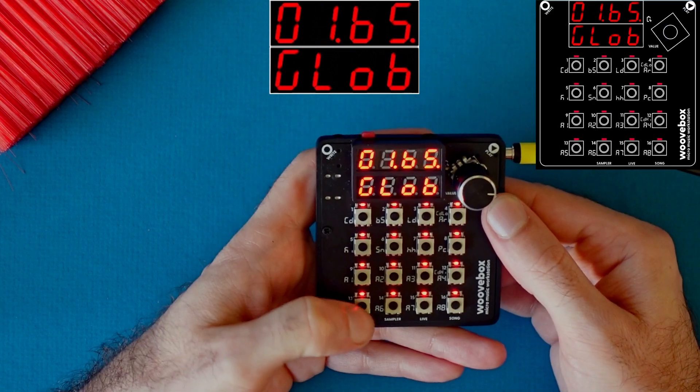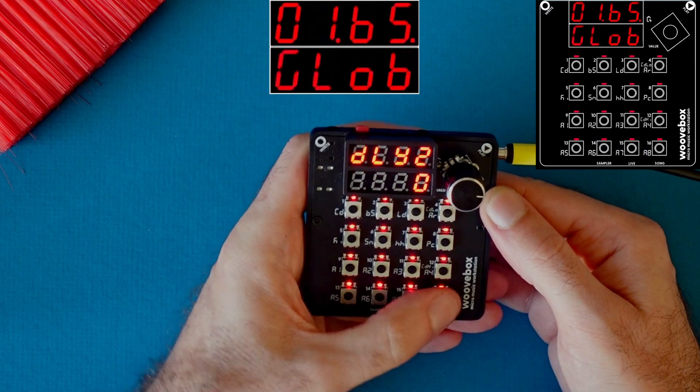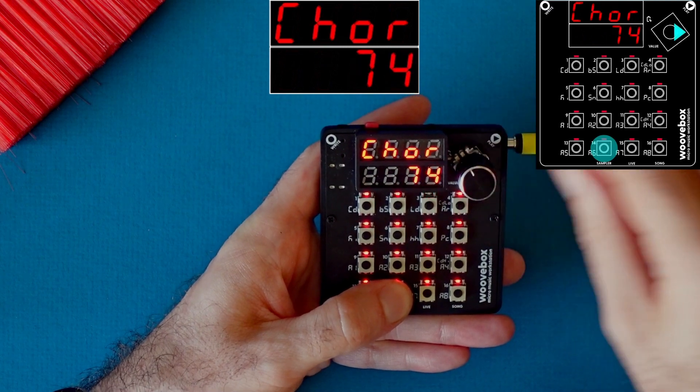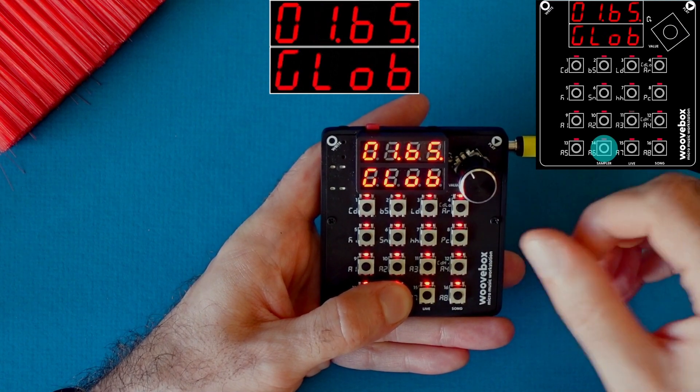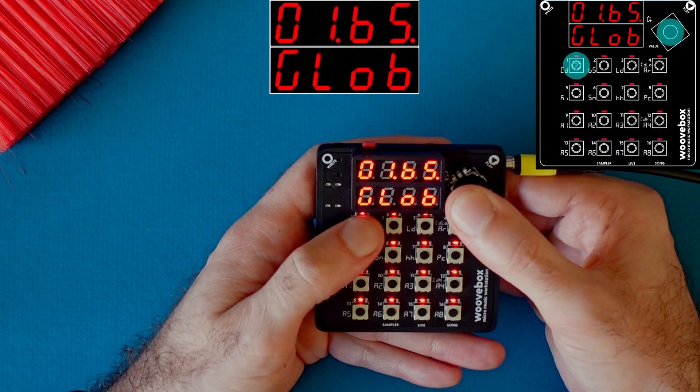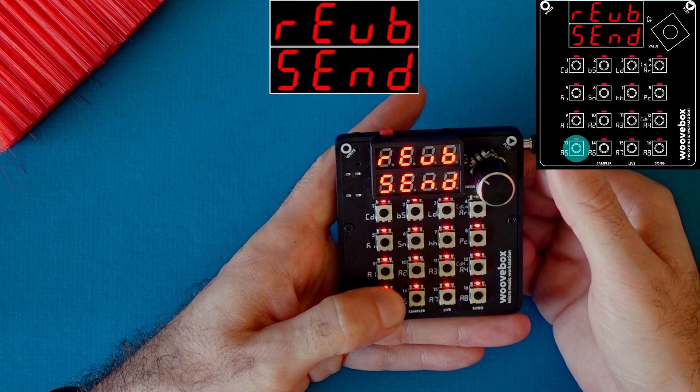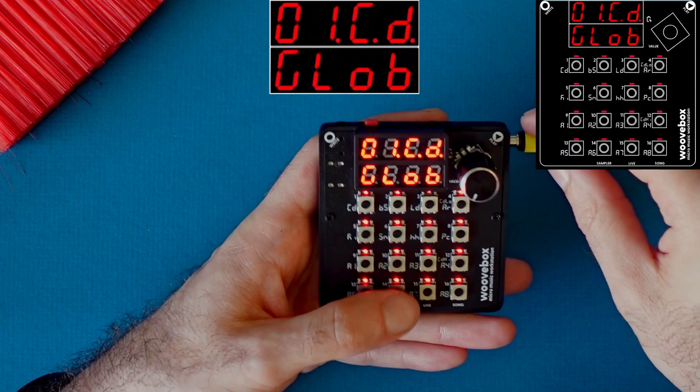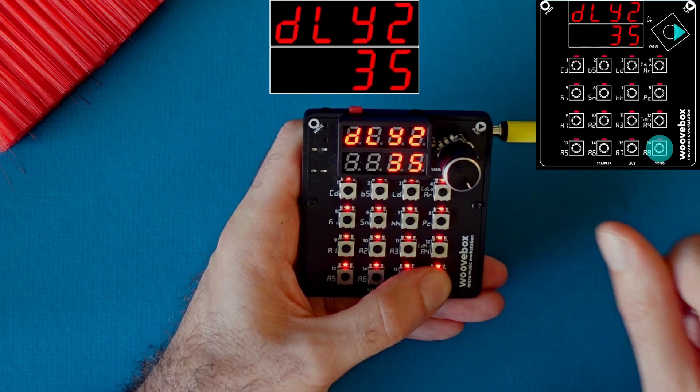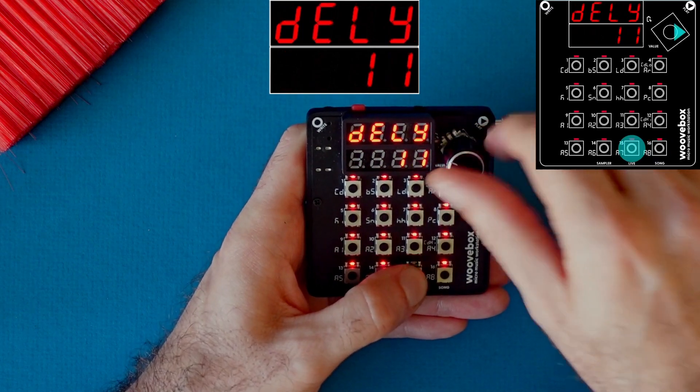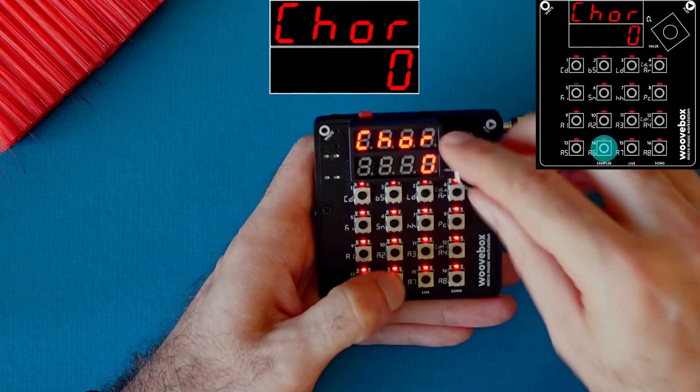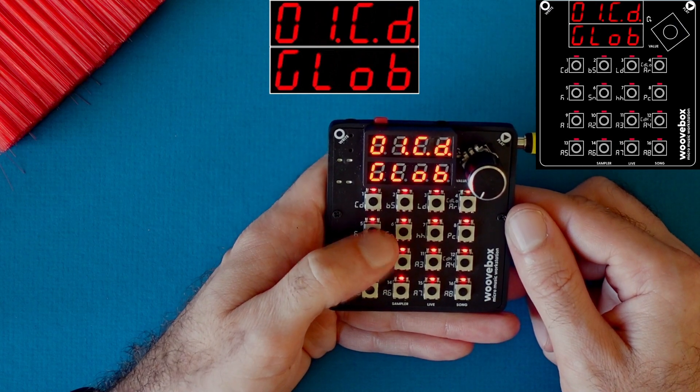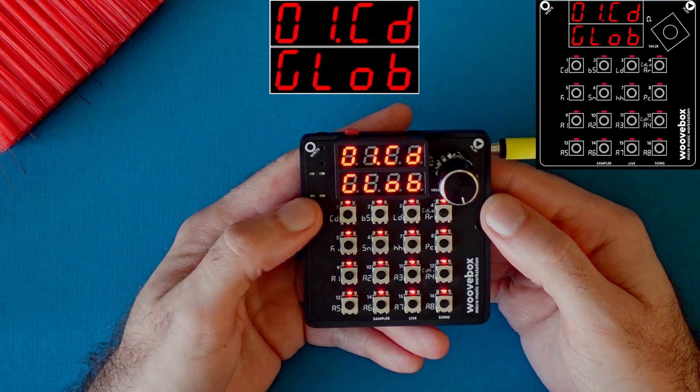And next we have the effects sends. So we have reverb, chorus, delay one and delay two. So I'll just add a little bit of chorus. Very nice. I love how thick and stereo that is. Let me go to the chord track for this. This has a lot of reverb on it already. Let's turn that off. This is delay two. You can have both delays and chorus. That's a little much. That is how you use the effect sends.